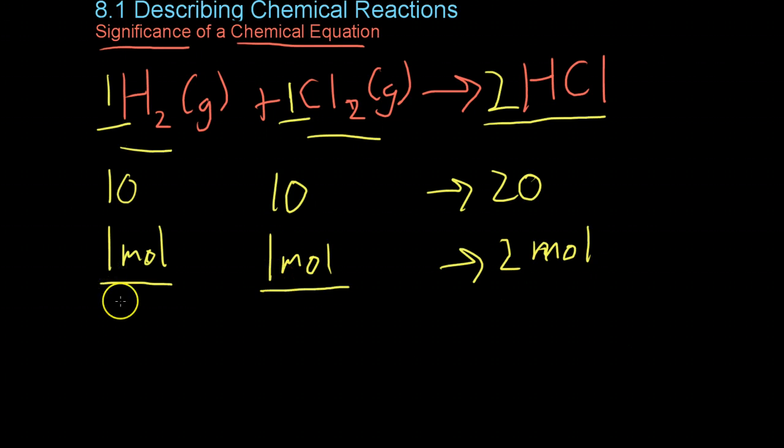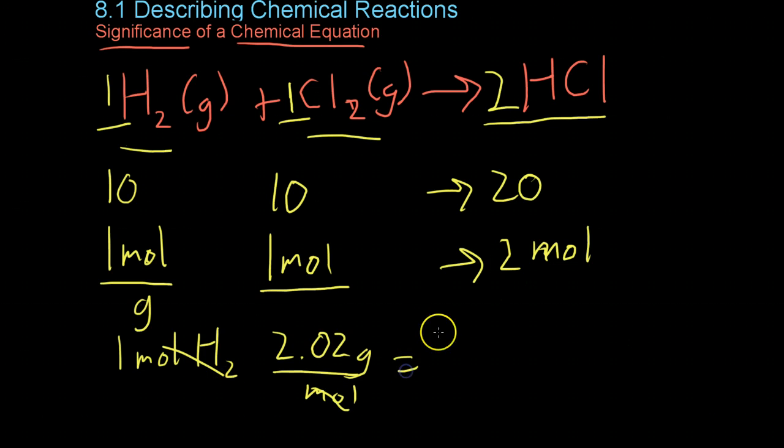And if you were to do this reaction in lab, where you would have to measure out the amount of each reactant in grams, you could use the molar mass to figure out how much of each element you would need in this case. So for example, if you were to take the one mole of hydrogen, which weighs 2.02 grams per mole, cancel them out, and you get 2.02 grams you use in total.